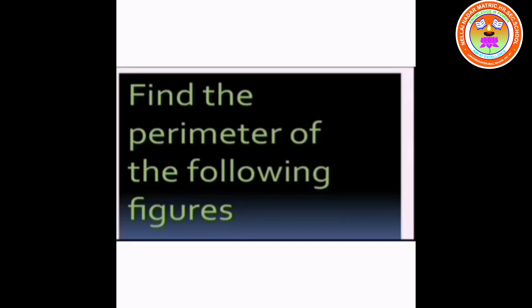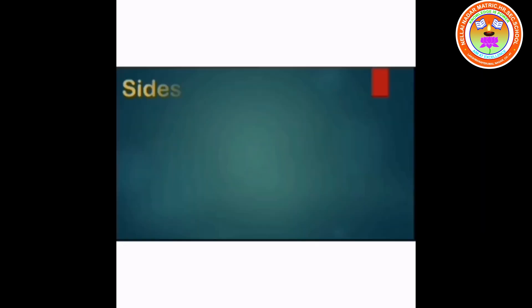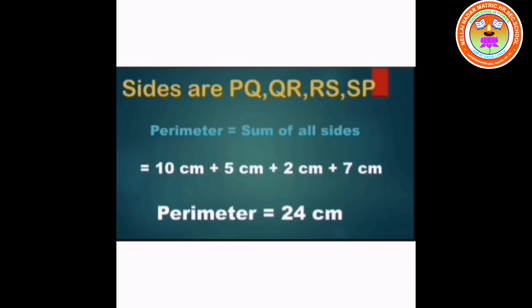Sum 1: Find the perimeter of the following figures. This is a trapezium with sides PQ, QR, RS, and SP. Perimeter is equal to the sum of all the sides. PQ is equal to 10 cm, QR is equal to 5 cm, RS is equal to 2 cm, SP is equal to 7 cm. Perimeter is equal to 24 cm.